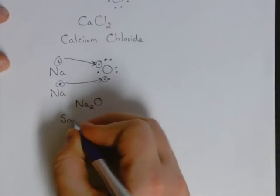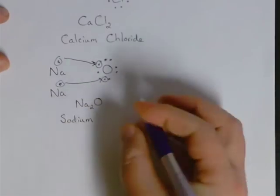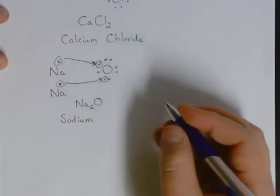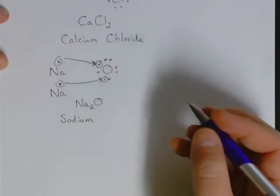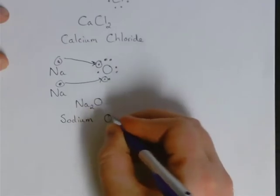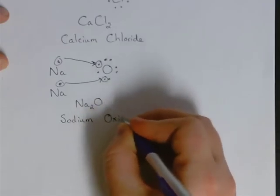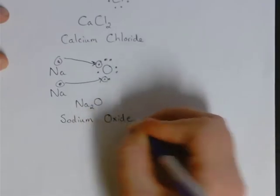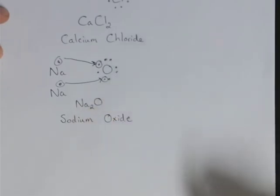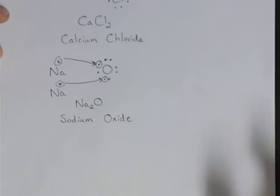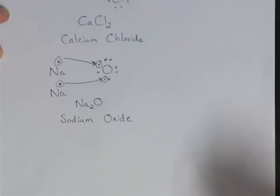Sodium — we keep the name of the metal. Oxygen, we change the ending to an -ide ending: oxide. It is a little tricky to figure out all of the endings for all of the different non-metals, but there aren't that many of them. Once you get the hang of it and learn the different endings for these ionic compounds, it's really not that hard.